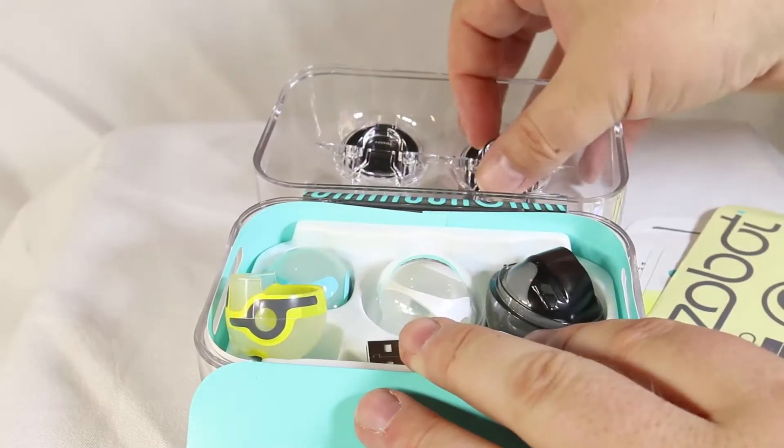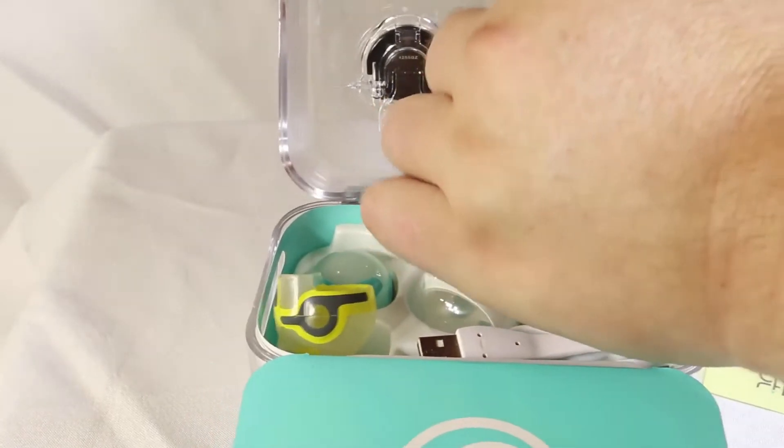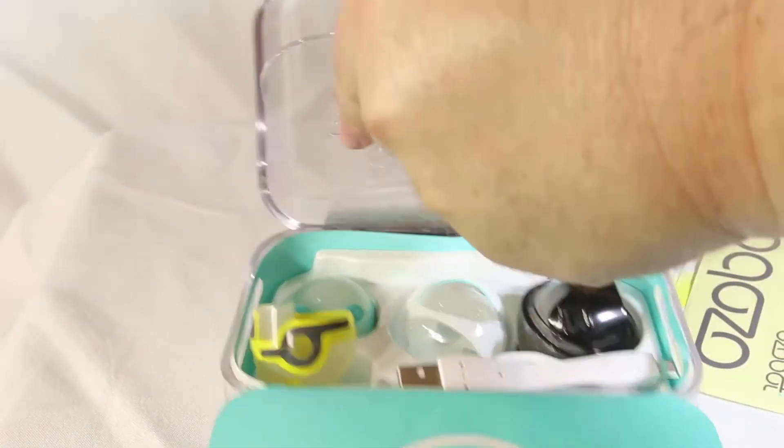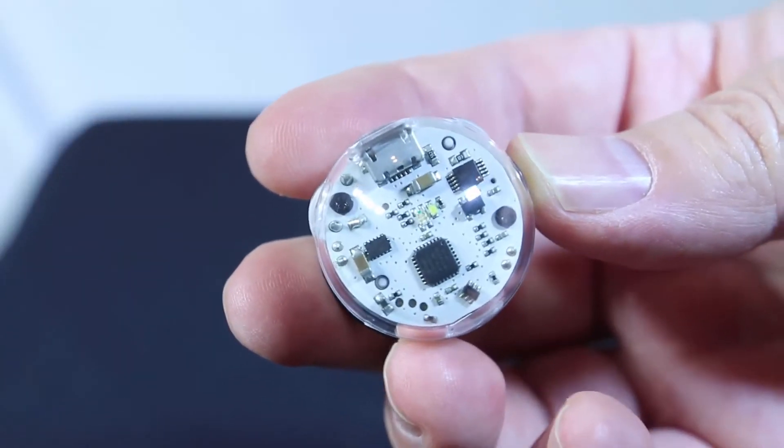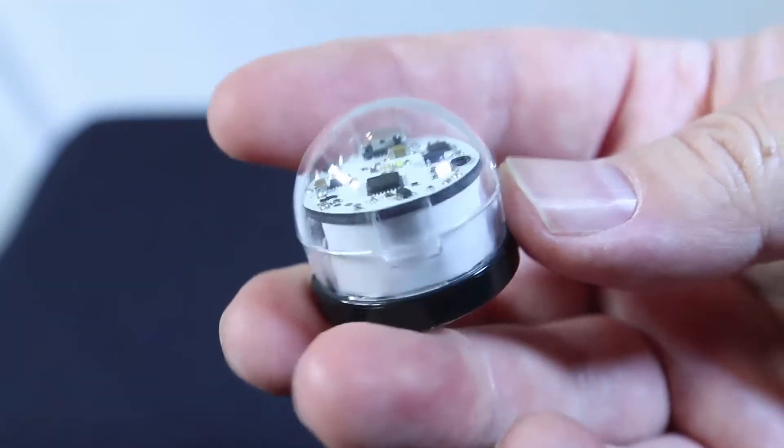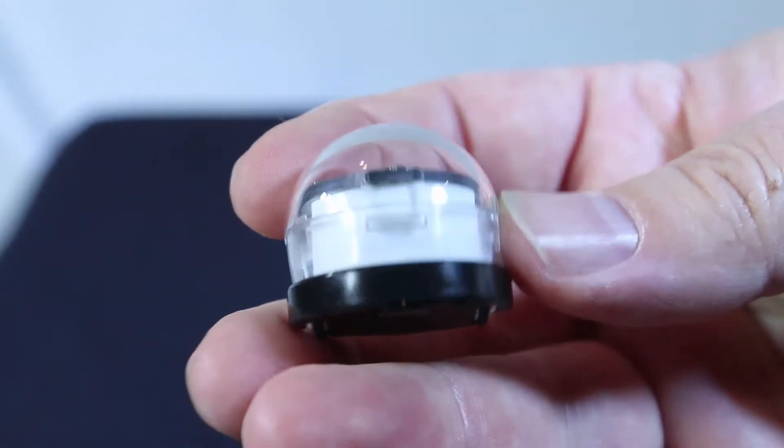They're very cool—like little mini robots in and of themselves. Here's one, a clear version. You can put covers on it. You can see it's got little wheels and sensors that tell it where it's going.